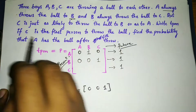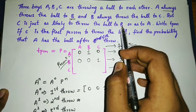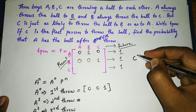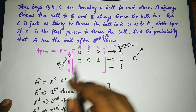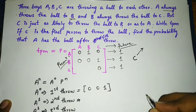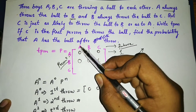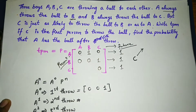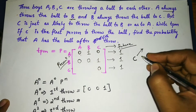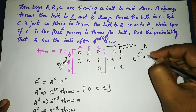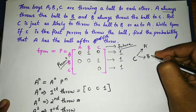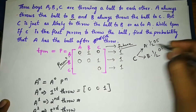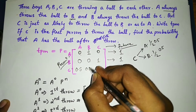For C's row: C is equally likely to throw the ball to A or B. C will not throw to himself, so that is zero. The chances of throwing to A or B are half and half — so both are 0.5. The row is: 0.5, 0.5, 0.